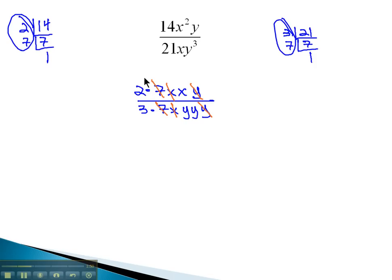Dividing out those common factors, in the numerator what's left is a 2 and an x or 2x. In the denominator, 3 and when y is multiplied together twice, that means it's y squared.